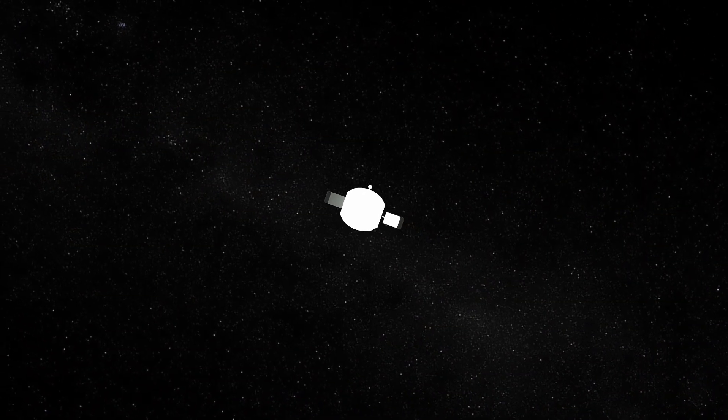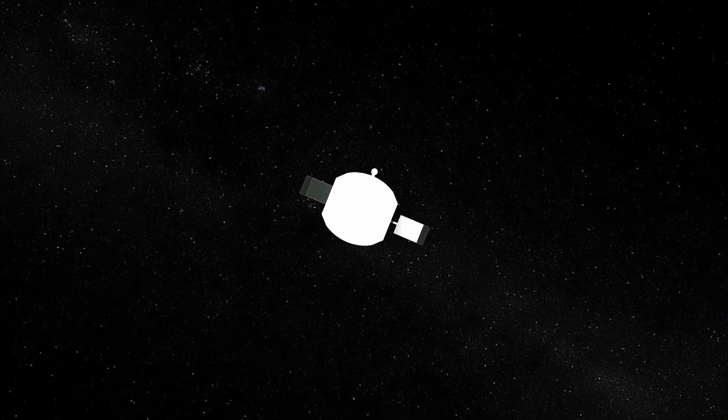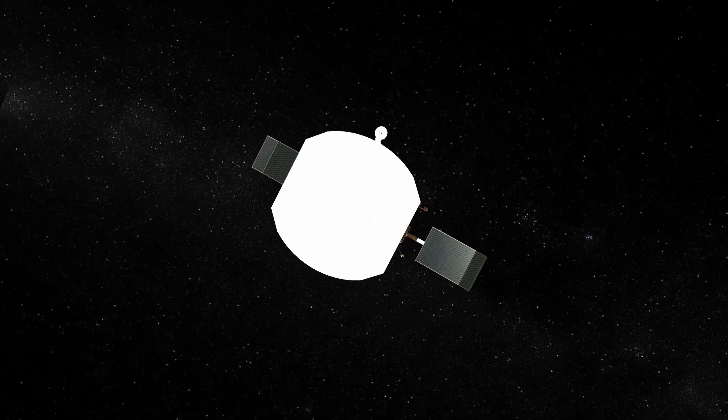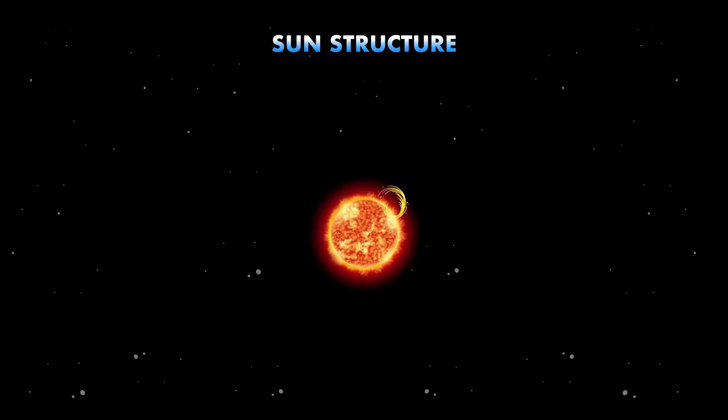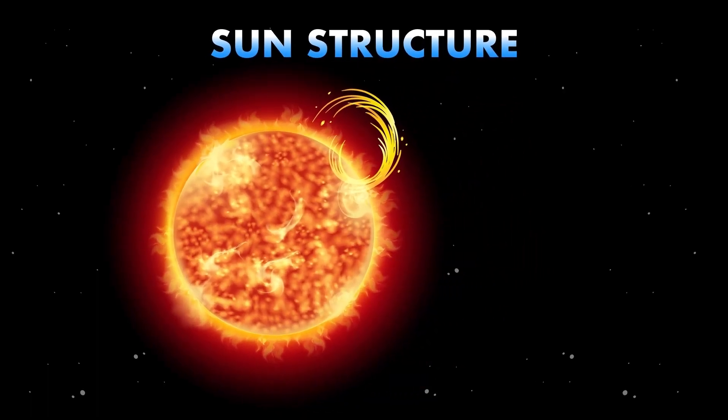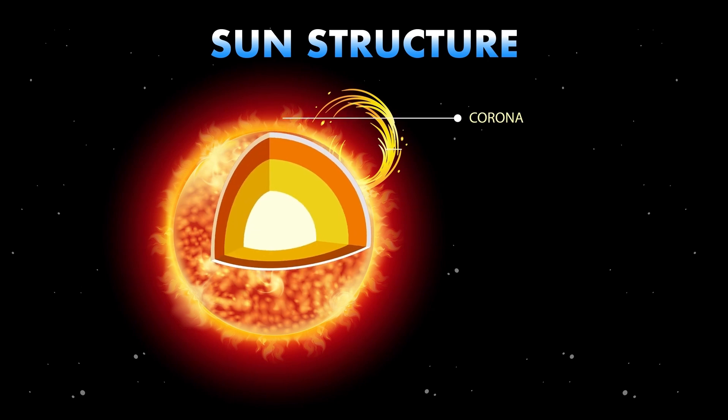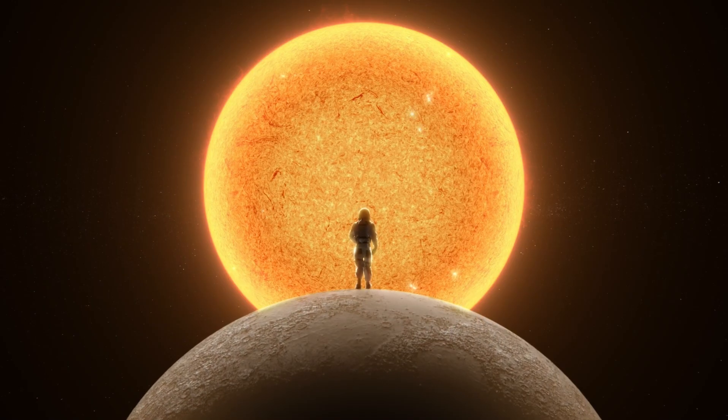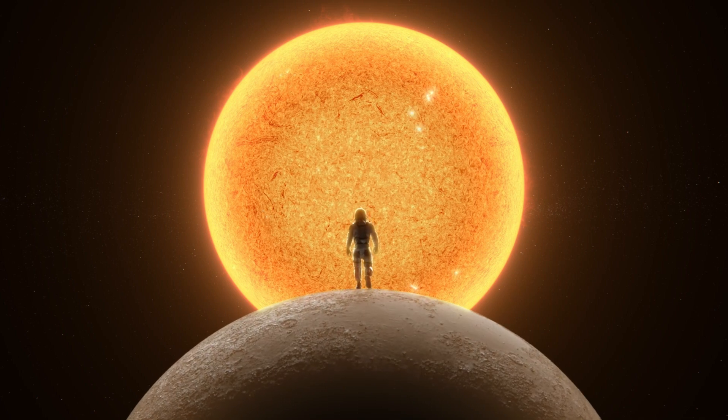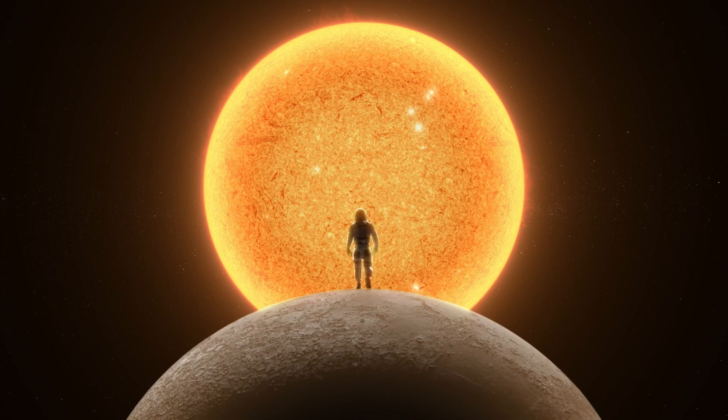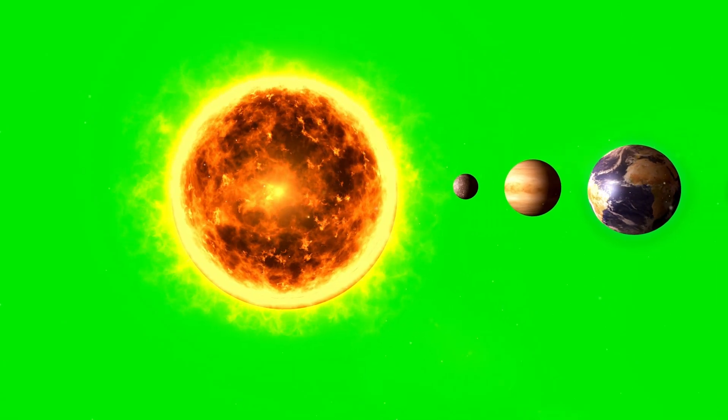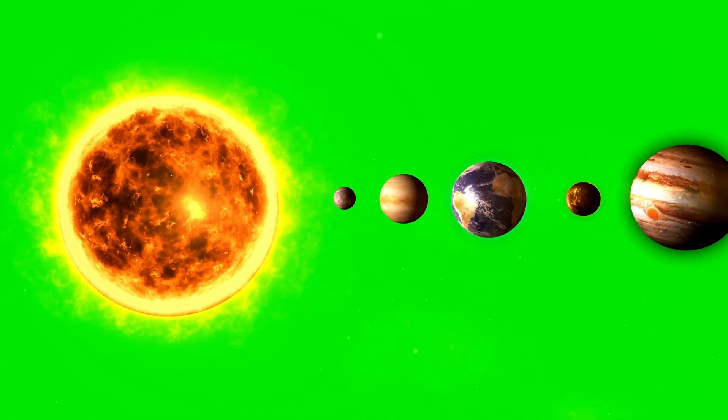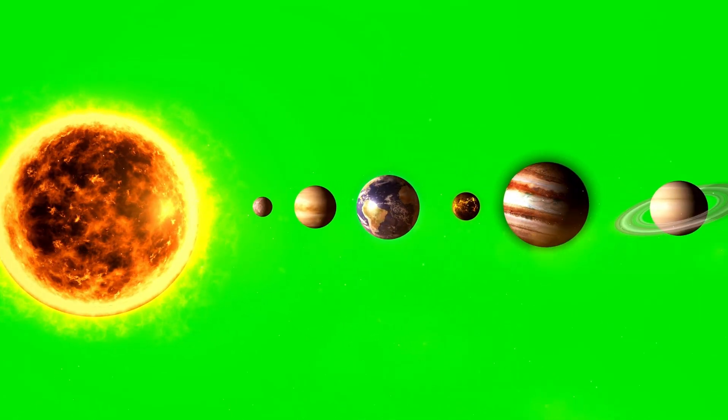Exoplanets are most commonly discovered through the changes they cause in their host stars. The gravitational influence of an exoplanet can cause its host star to wobble, and this radial velocity can be detected by astronomers. The Kepler Space Telescope used the transit method, which measures the dimming of a star's light when an exoplanet passes in front of it. This method has provided invaluable information about exoplanets, including their size, distance, and temperature.